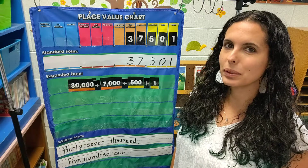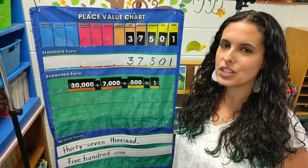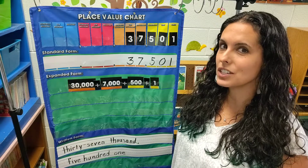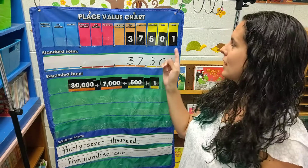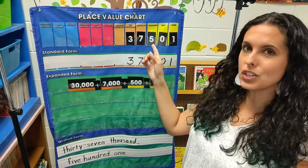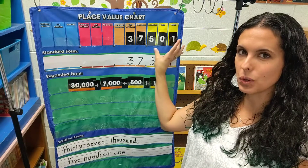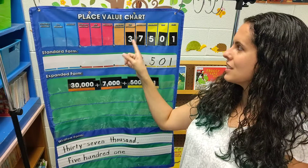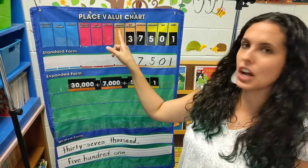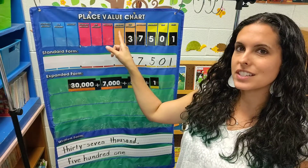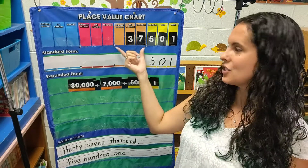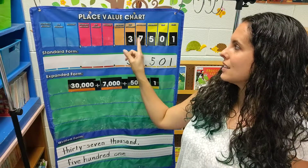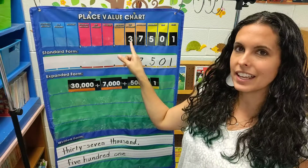Today we're going to talk about place value to the ten-thousands place. Let's review. Ones, tens, hundreds — that's your ones period. Thousands and ten-thousands, then hundred-thousands — and that's your thousands period. We're going to stop at the ten-thousands today.